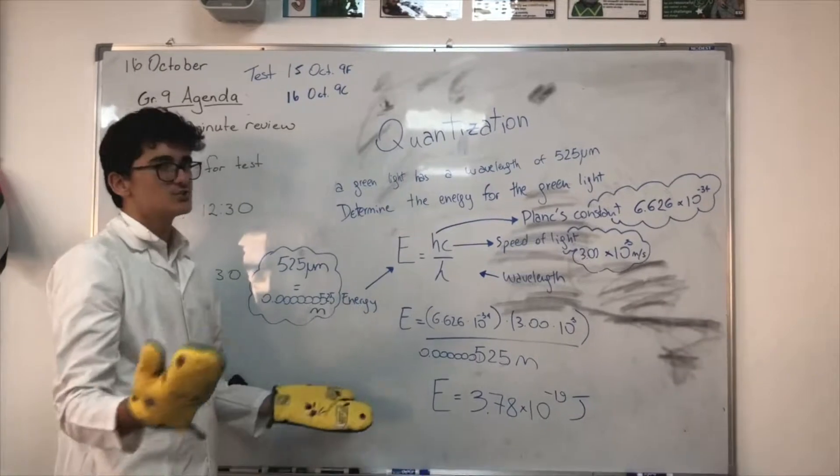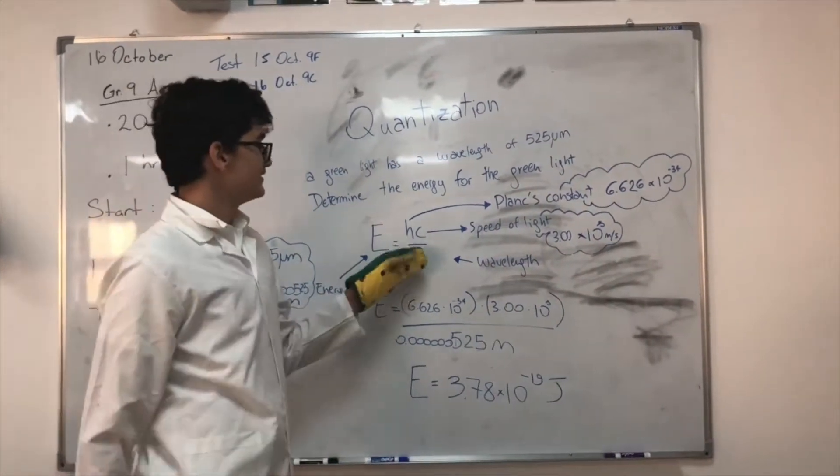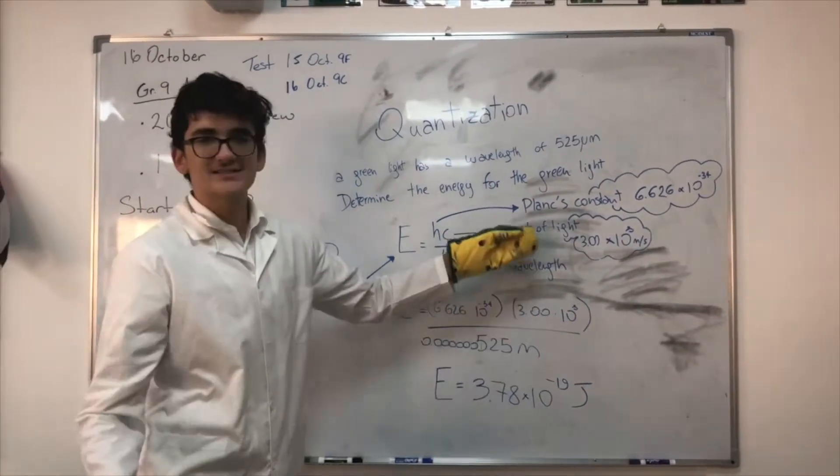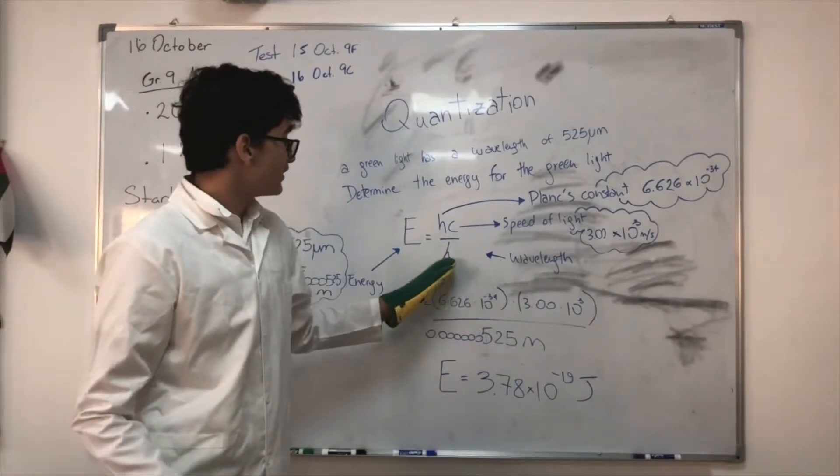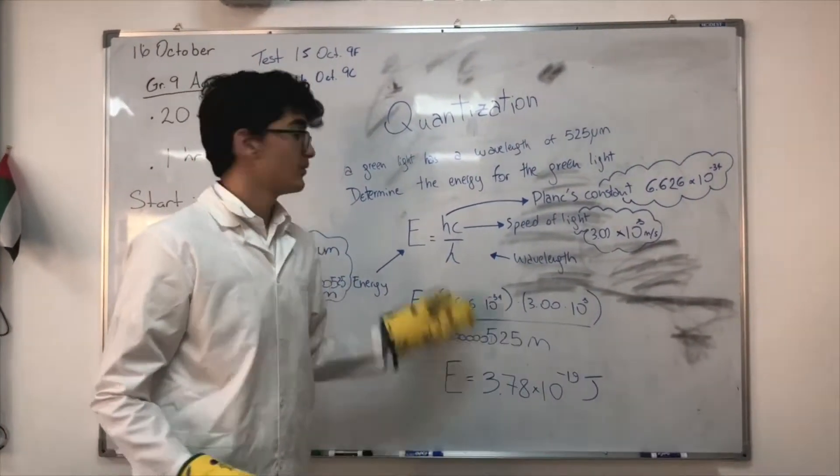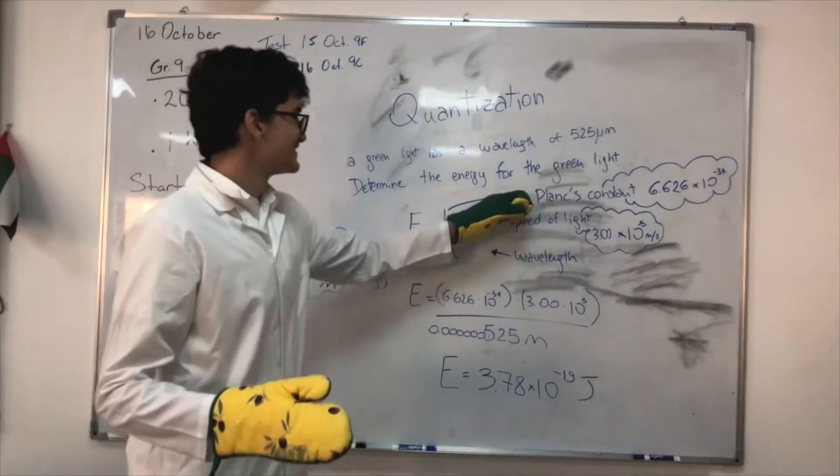Energy, E, in joules, obviously, equals hc, Planck's constant times speed of light, divided by the wavelength, represented by that lambda.